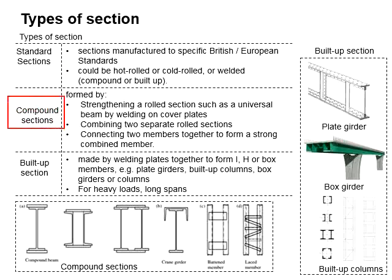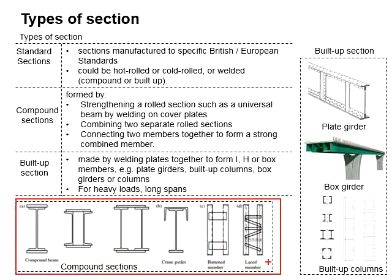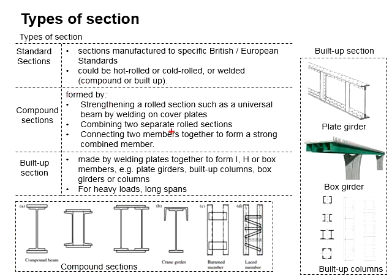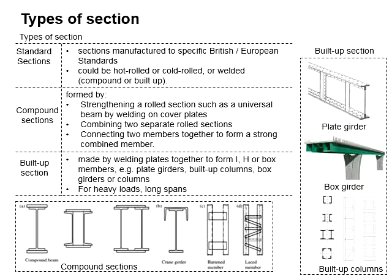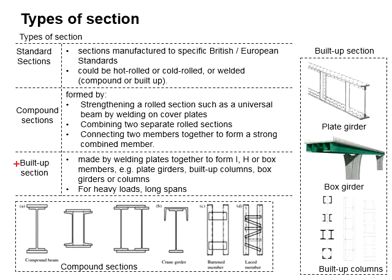The second type is compound sections. These are formed by strengthening a standard section such as a universal beam by welding on cover plates, by combining two separate standard sections, or by connecting two members together to form a combined member. Standard sections can be strengthened by adding plates, welding two sections together, or combining different standard sections to strengthen the properties of the member.